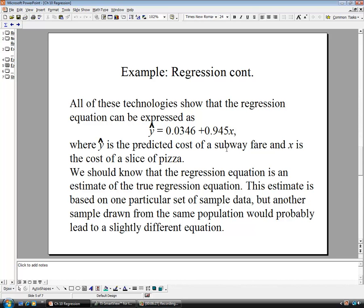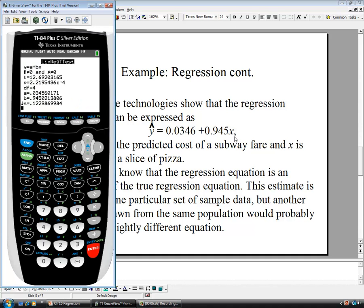So if we wanted to predict what the value would be for a subway token, if the slice of pizza was $1.50, I'm simply going to put in 1.5 for x, and that's basically 0.0346 plus 0.945 times 1.5.